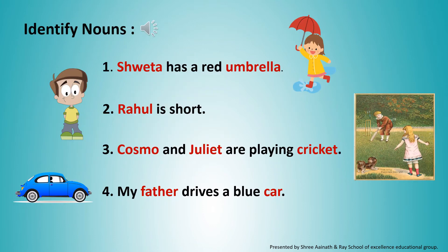I hope children you have understood what nouns are. So let us now identify nouns in the given sentences. The first one is: Shweta has a red umbrella. The nouns are Shweta — Shweta is a noun — and umbrella — umbrella is a noun. Second: Rahul is short. Rahul is a noun.